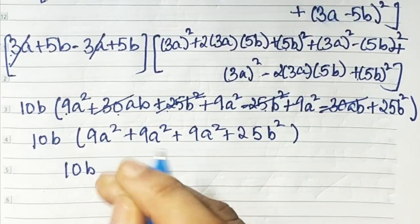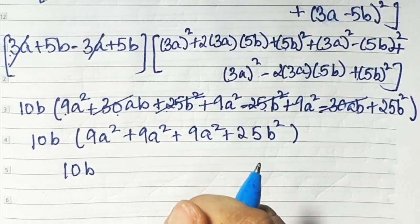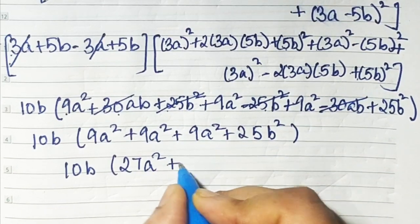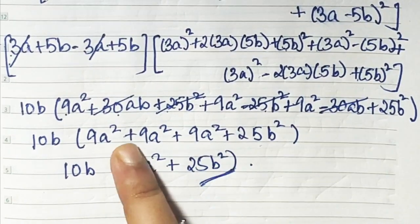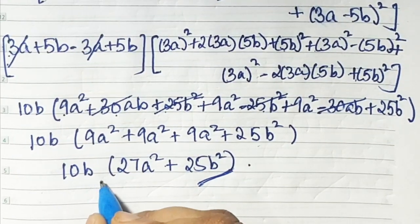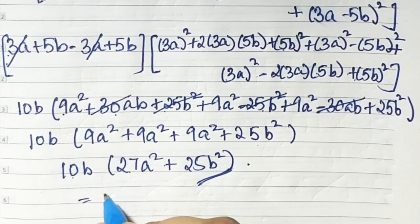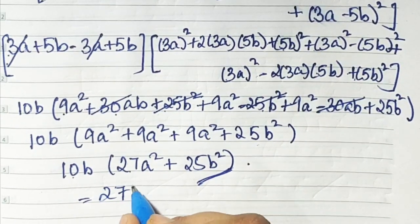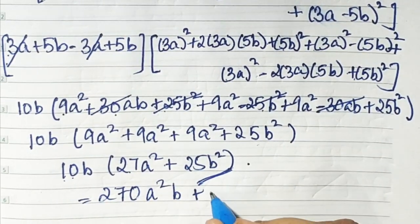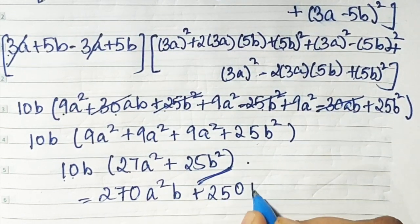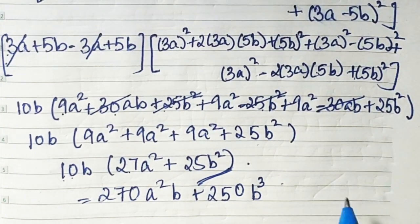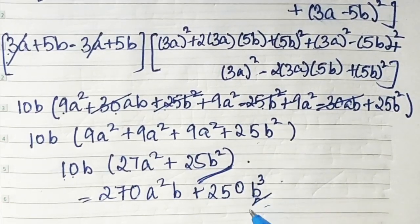So we have 10b times (27a square plus 25b square). That gives 10 times 27 = 270a square b, plus 10 times 25 = 250b cube. So 270a²b + 250b³ is your answer.